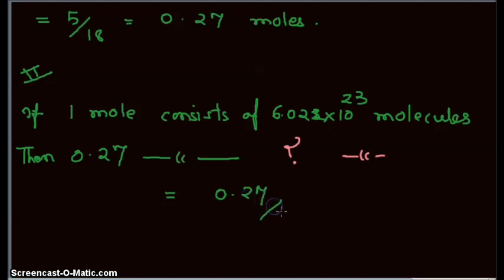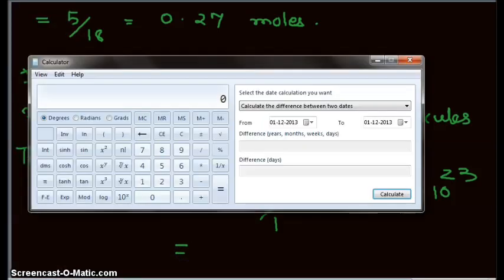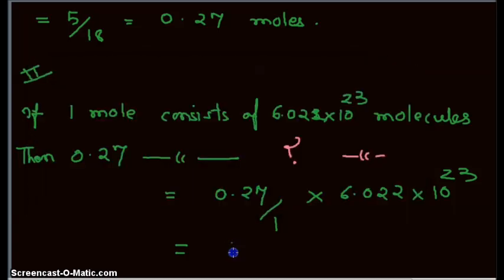0.27 times 6.022×10²³ which is Avogadro's number, and you get 1.62×10²³. That is the number of molecules present in five grams of water. That is the answer.